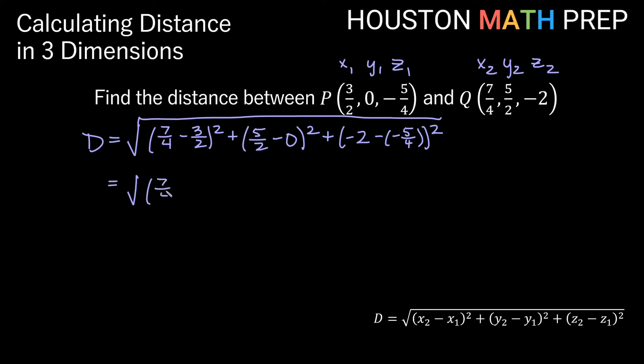So here I'll think of this 3/2 as 6/4, multiplying the top and the bottom by 2, so 7/4 minus 6/4 squared, plus this is really just going to be 5/2 squared here, so we don't have to worry about a common denominator in there. Plus if we think of this as -2/1, then what we'll need to do is multiply the top and bottom by 4, so we'll get -8/4, minus negative would be plus 5/4, all of that squared.